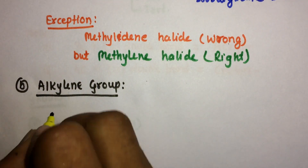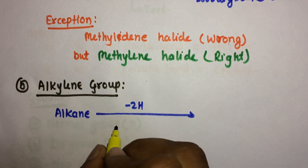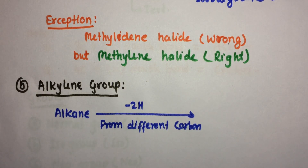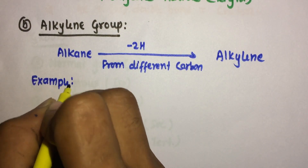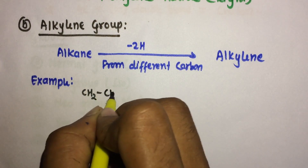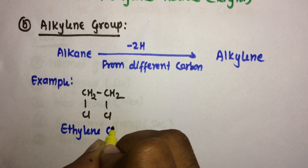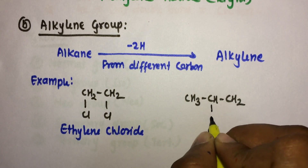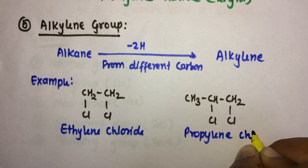The second group is the alkylene group: if the second valency is free from different carbons, it is termed alkylene. Here, the alkane loses two hydrogens from different carbon atoms to form alkylene. For example, ethylene chloride or propylene chloride.